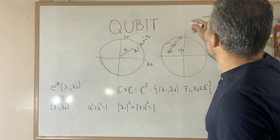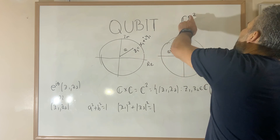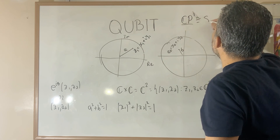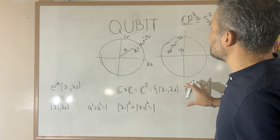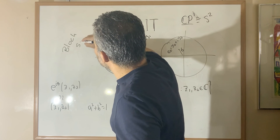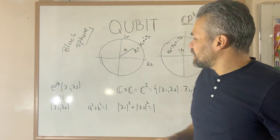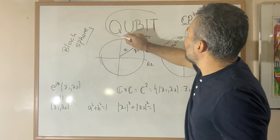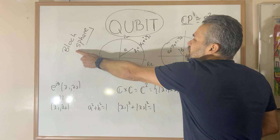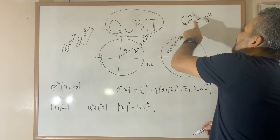For that reason, essentially the qubits are represented by what is known as the complex projective space CP1, which is well known to be a sphere. By the way, the sphere described before is called the Bloch sphere. This is it for this video — just wanted to explain an interpretation for the qubit and how qubits can be viewed as points in the Bloch sphere and as points in the projective space.